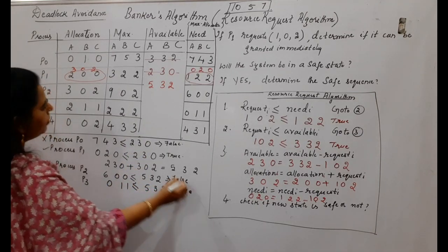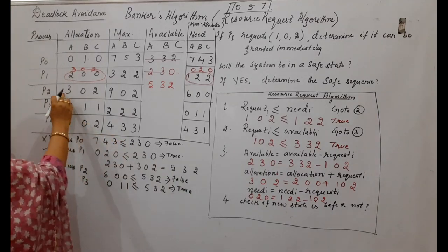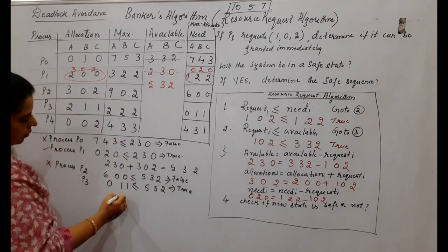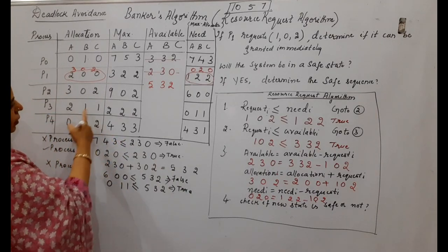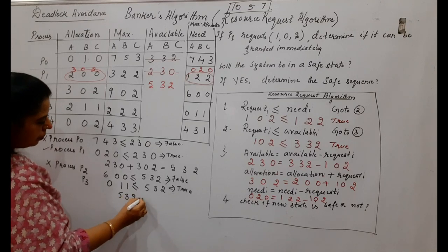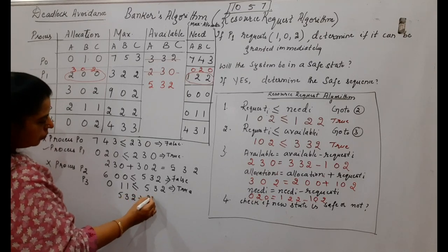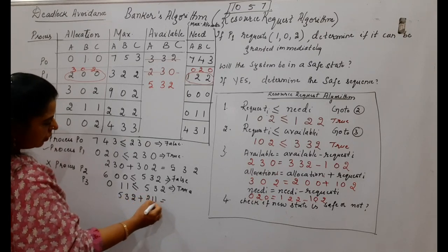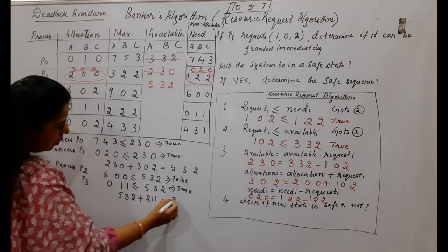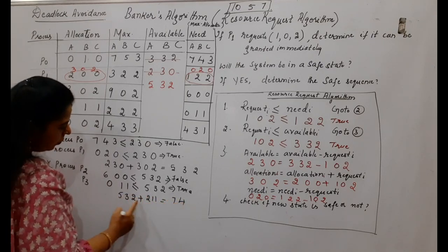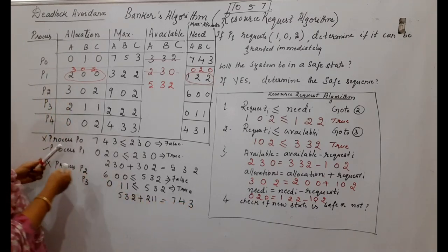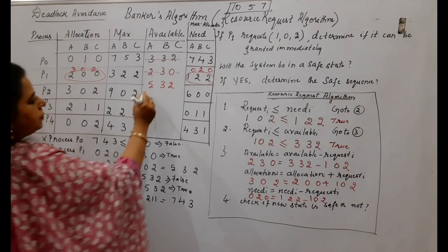P3 completes. Available becomes available plus P3's allocation: 5,3,2 plus 2,1,1 equals 7,4,3. Update available to 7,4,3.